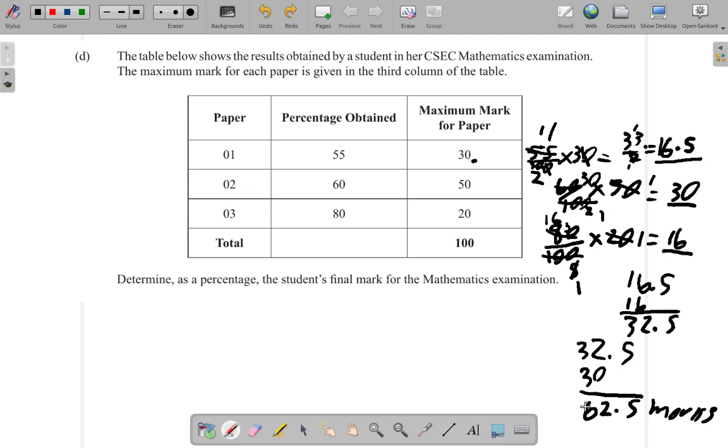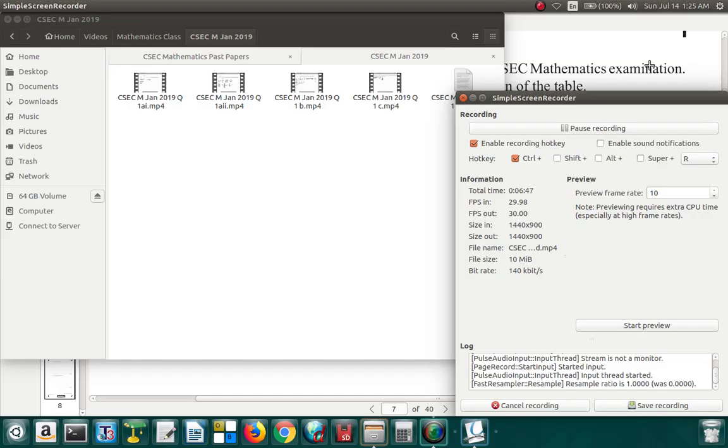62.5 marks out of 100 marks available means 62.5%. So as a percentage, the student's final mark for the examination was 62.5%, since the total marks is 100. So 62.5% is the answer. Thank you.